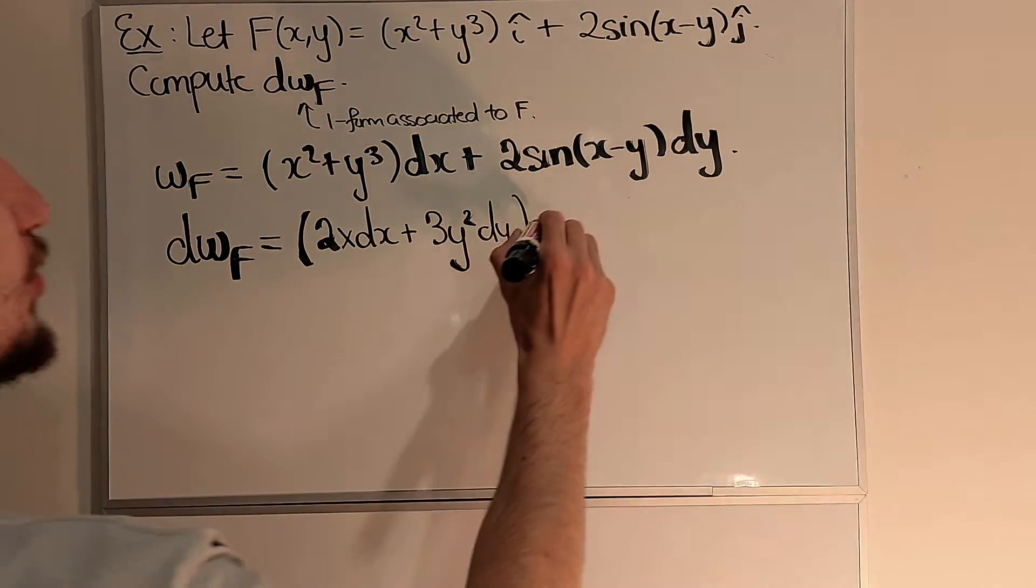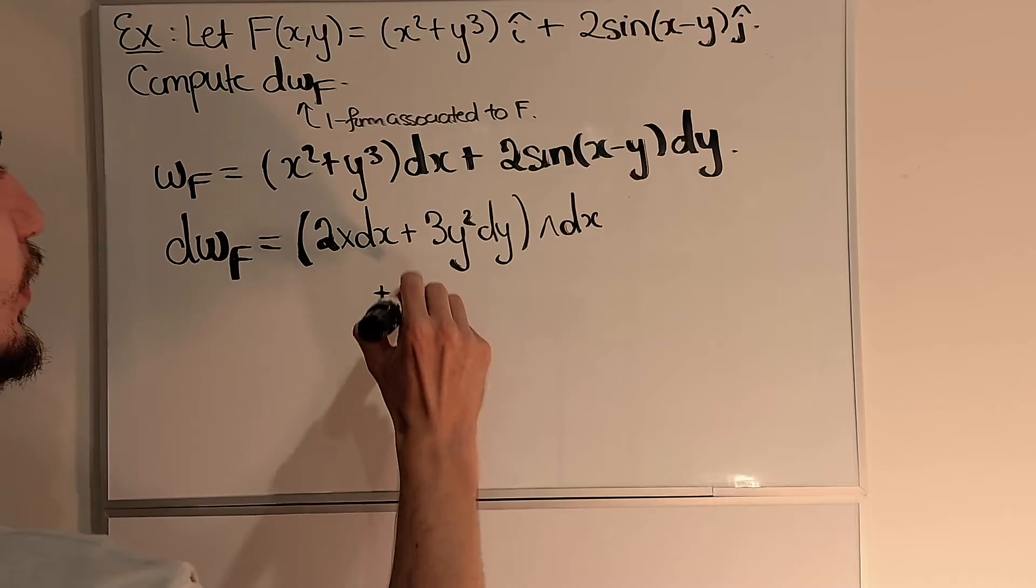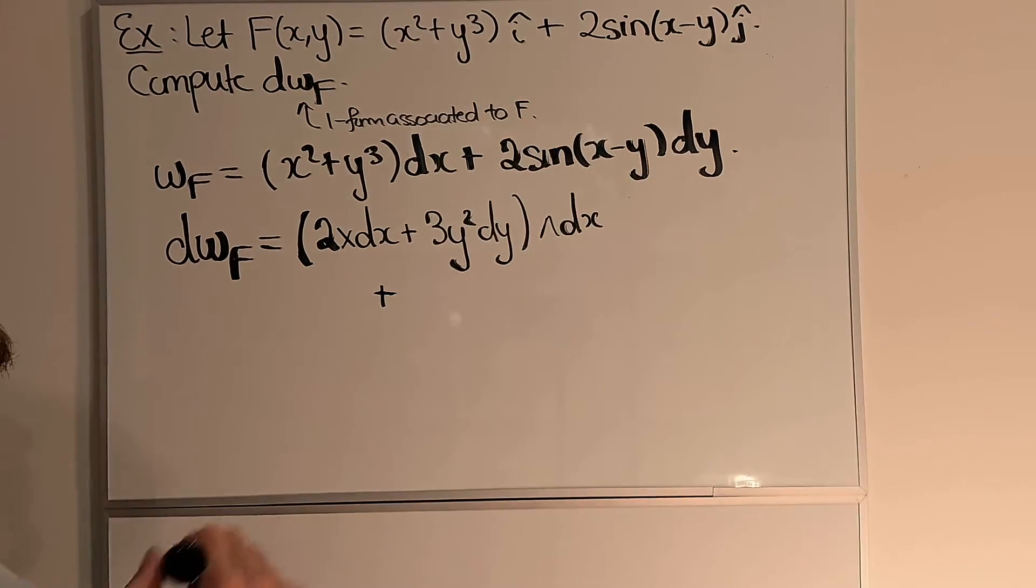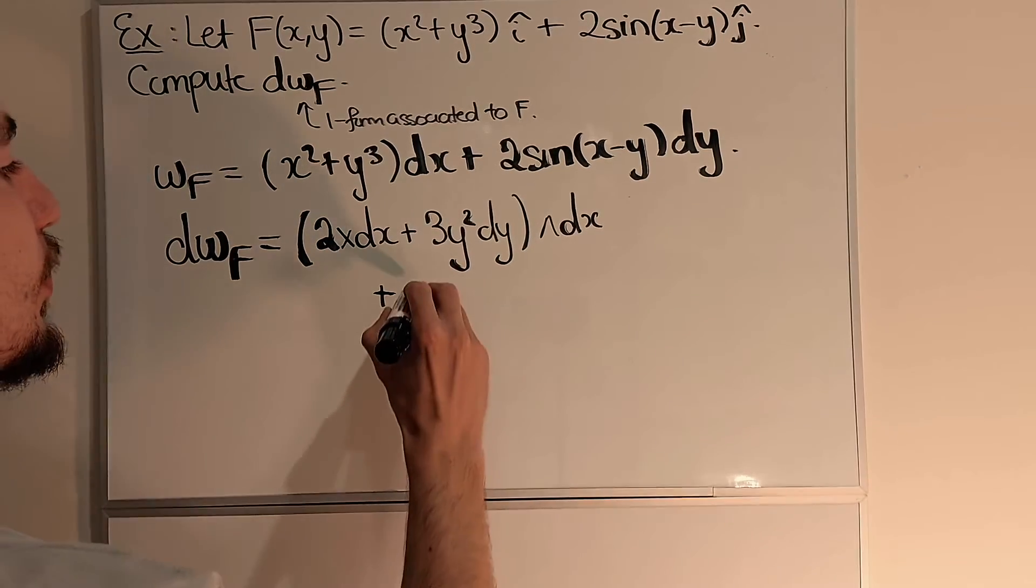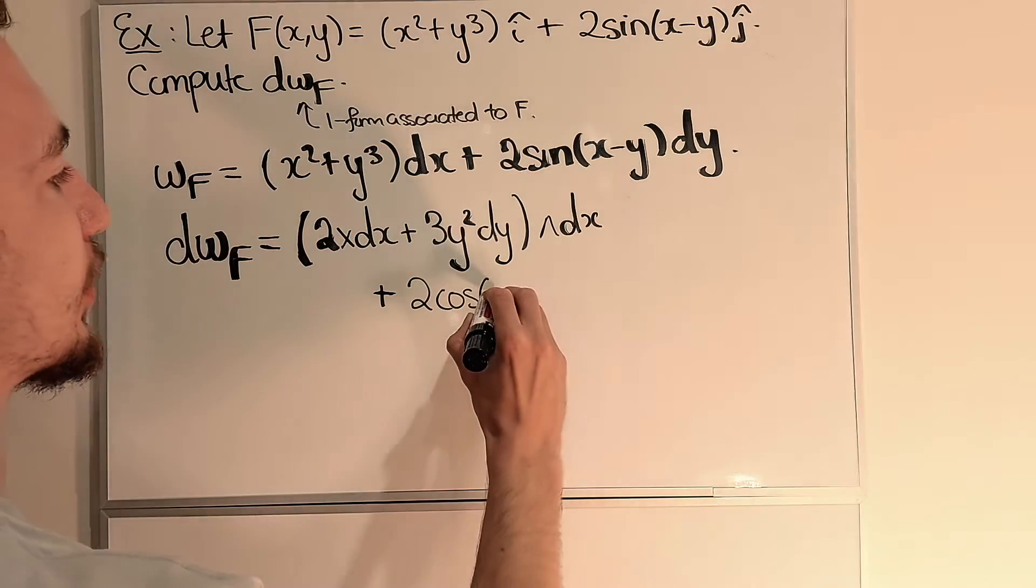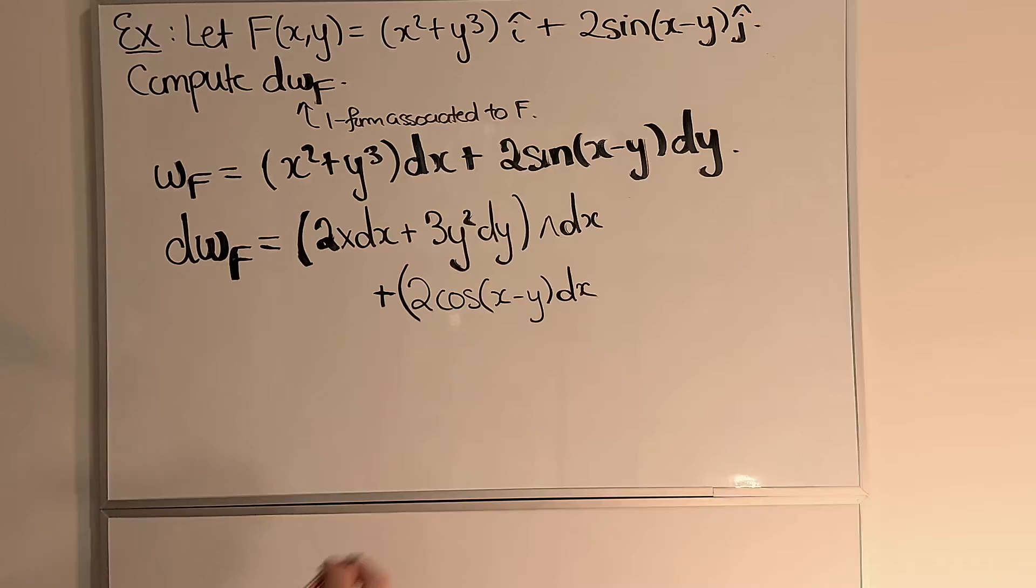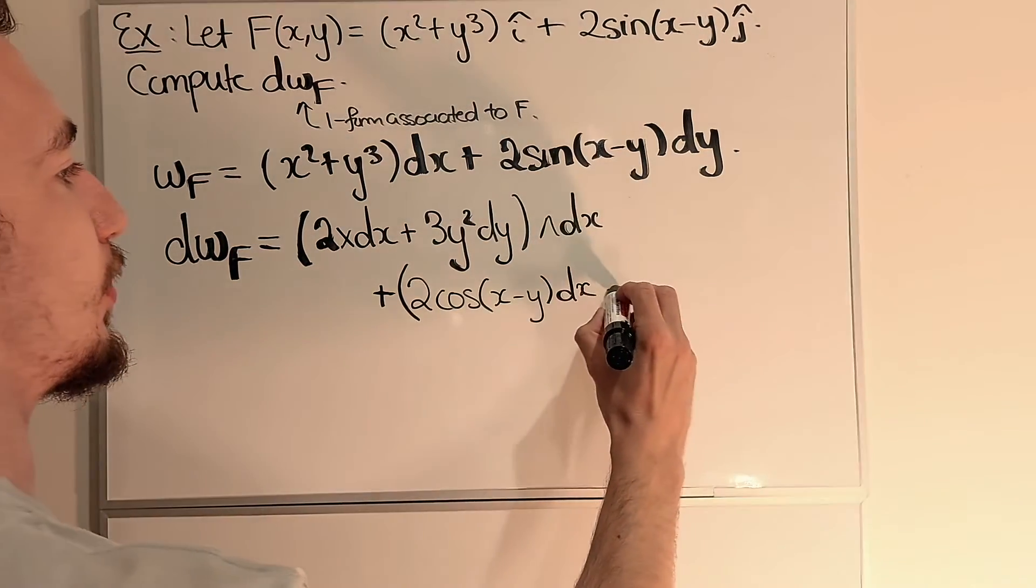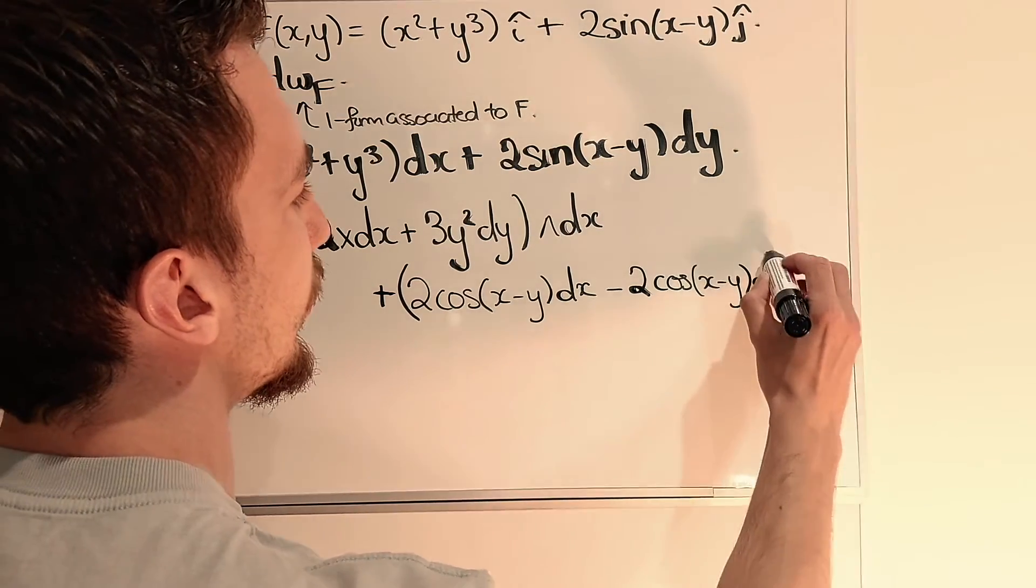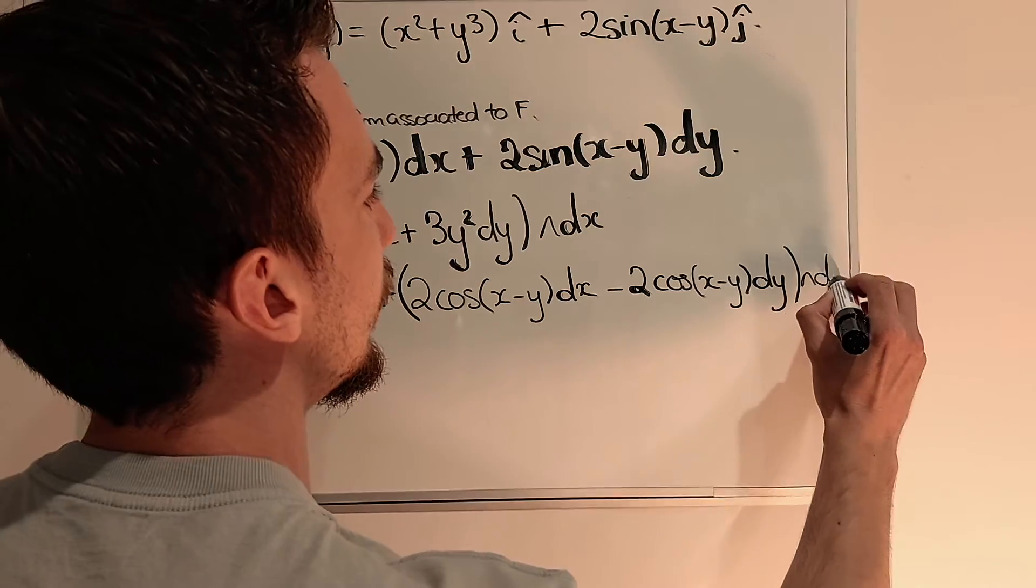And now what we have to do is wedge with dx. Similarly, if we differentiate 2sin(x-y) with respect to x, then what we get is 2cos(x-y) dx. And if we differentiate with respect to y, because there's a minus here, I get 2cos(x-y) dy and I wedge with dy.